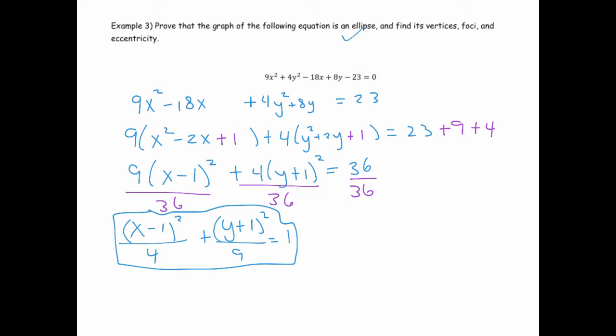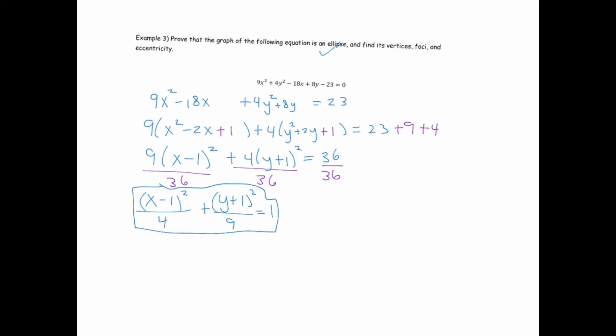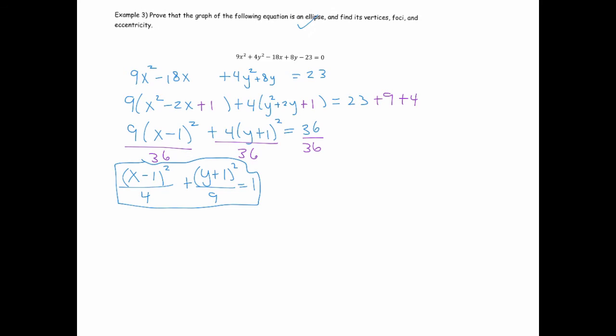So we know it's an ellipse because it fits the form. You know, there's a shift, but it fits the form of an ellipse. So now let's find the vertices. So to find the vertices, I usually draw a little picture. Now I know that my vertex is at the coordinates 1, negative 1 or my center rather.